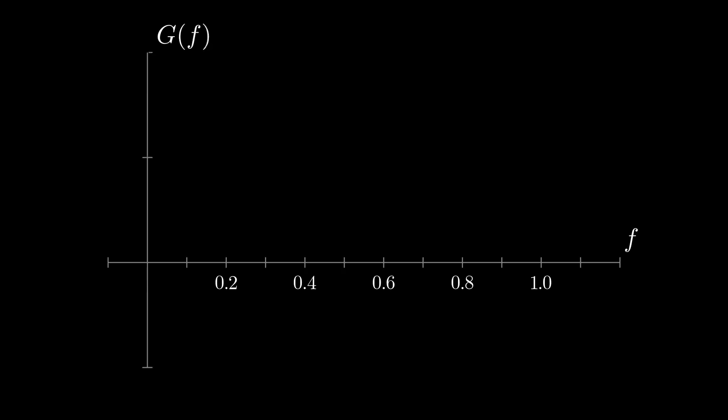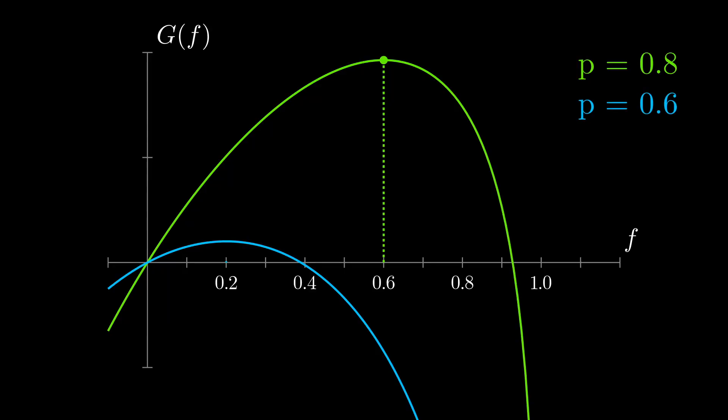So what can we learn looking at the growth rate of different chances for the same b of 1, based on different betting fractions? If we take the chances of winning 80% and 60%, for example, we see that the higher the chances of winning are, the higher the fraction is that you should place on a bet for an optimal outcome.